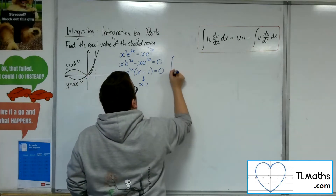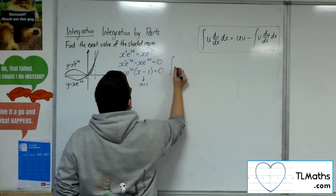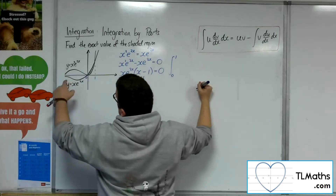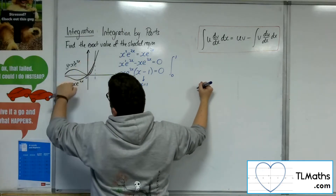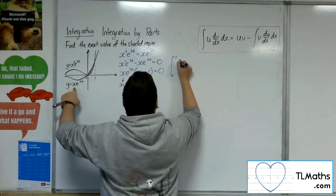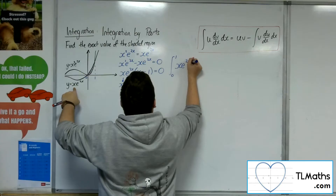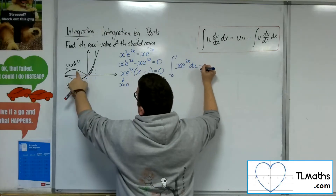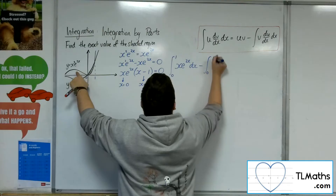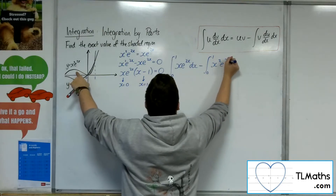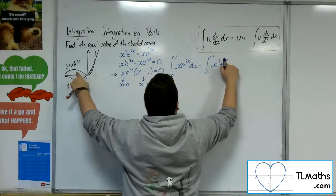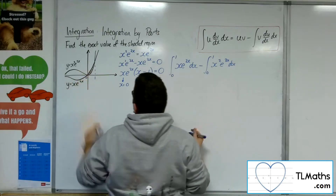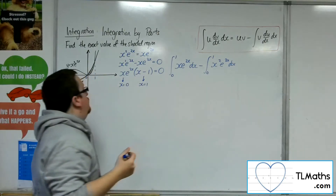I want to integrate between 0 and 1 the first curve, x e to the 2x, and then take away the integral of x squared e to the 2x dx. That will give me that shaded region.